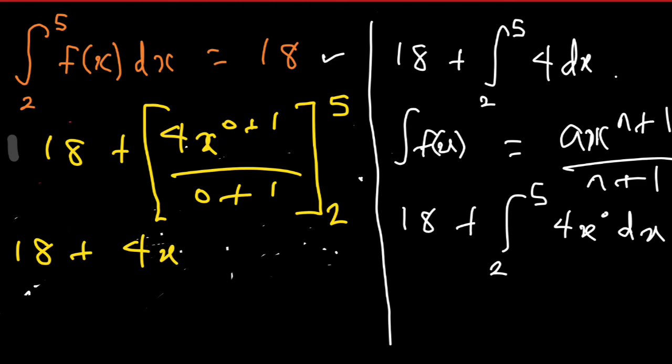So if I have 4x then I can easily substitute my 5 and 2. If I substitute my 5 and 2 I'll be having 18 plus, let's put into brackets, 4 times 5 when x equals 5 minus 4 times 2 when x equals 2.